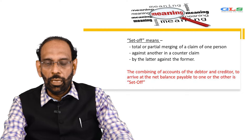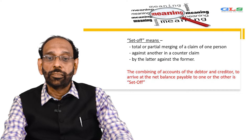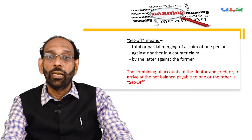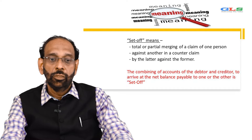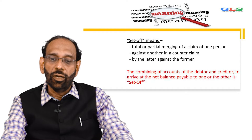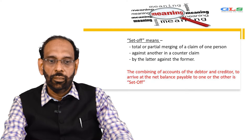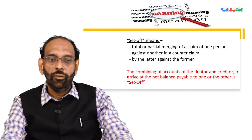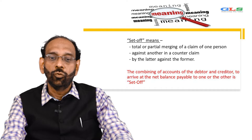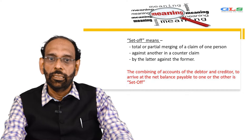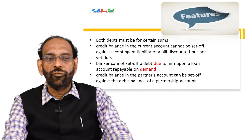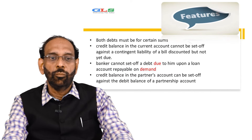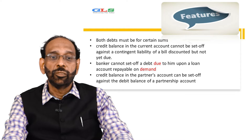So, combining of accounts of the debtor and creditor to arrive at the net balance payable to one or the other is basically a set-off. Let's understand the features now. Both debts must be in the form of certain sums — in the sense it must be quantified.